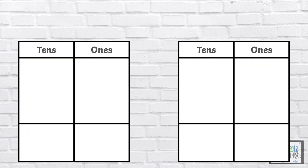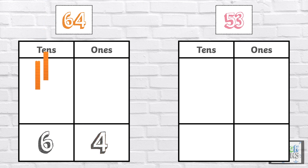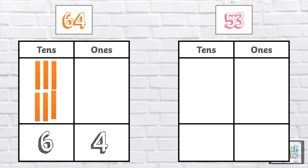Here are two more numbers. Which number is greater? The number 64 has six 10s and four 1s: 10, 20, 30, 40, 50, 60, 61, 62, 63, 64.